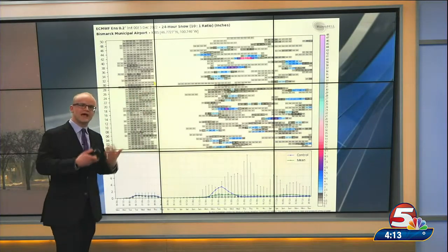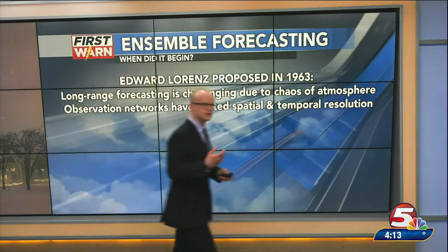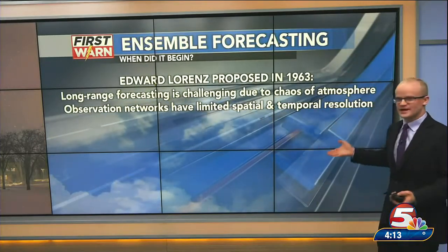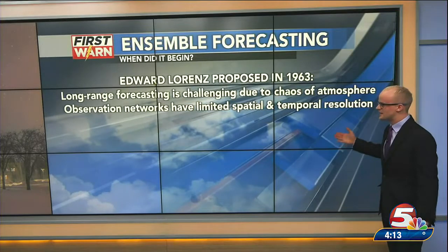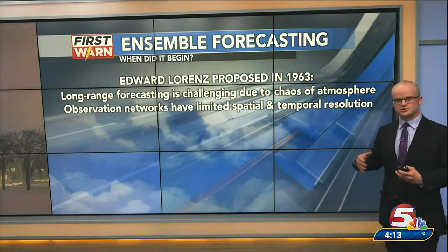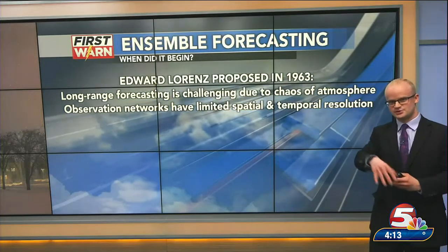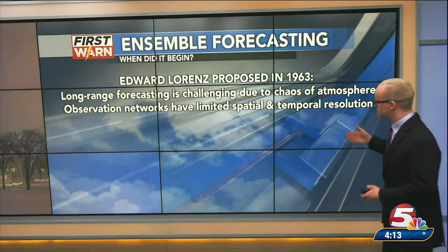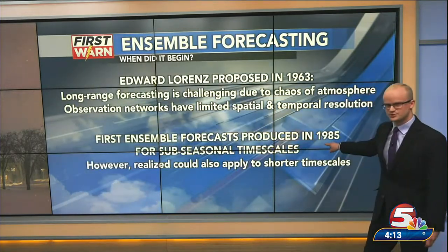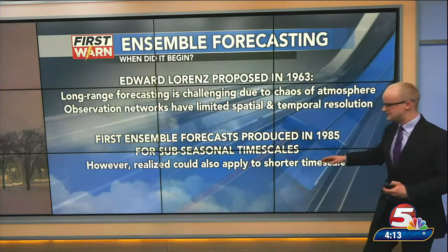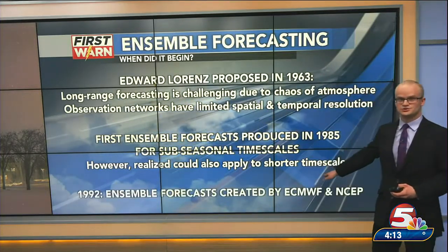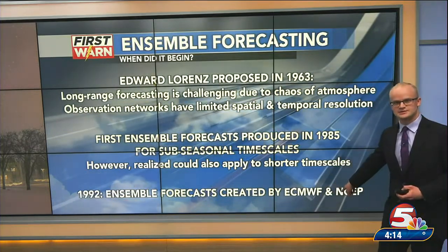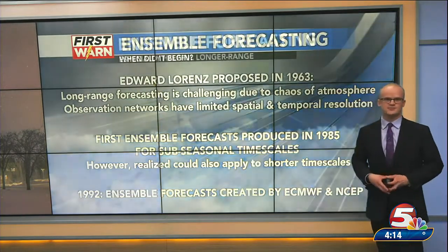Another example is snow — we have a bunch of different possible outcomes based on slightly tweaked initial conditions and slightly different model runs projected into the future. Back in 1963, a famous meteorologist noted that long-range forecasting is very challenging due to the chaos of the atmosphere, and that observation networks have limited spatial and temporal resolution. The first ensemble forecasts were produced in 1985 for longer lead times, but they can also be applied to shorter lead times. By 1992, both the Europeans and Americans started creating ensemble forecasts that we still use today.